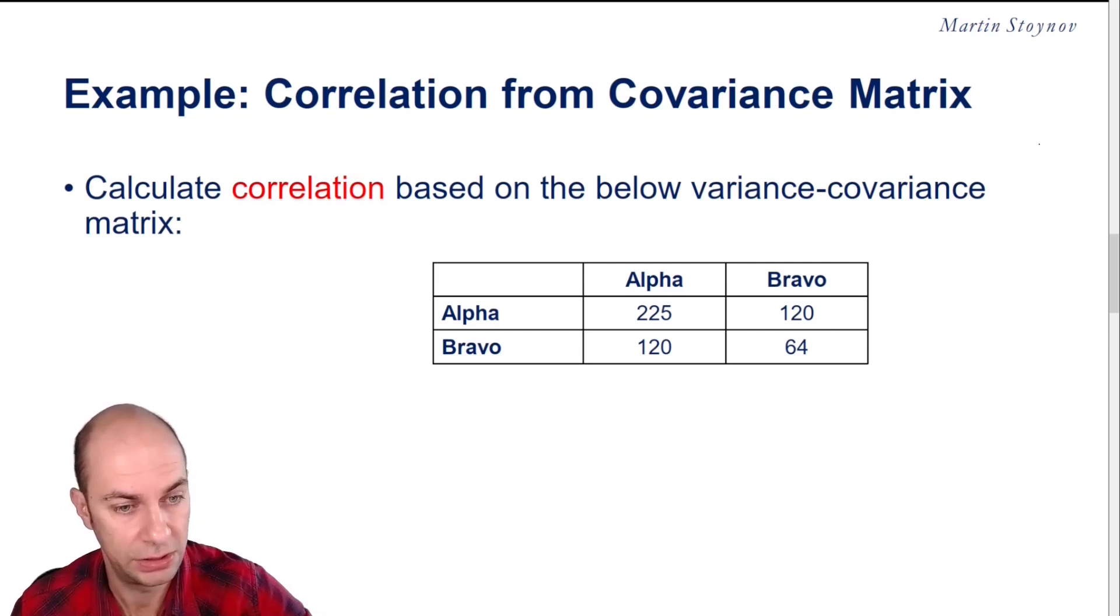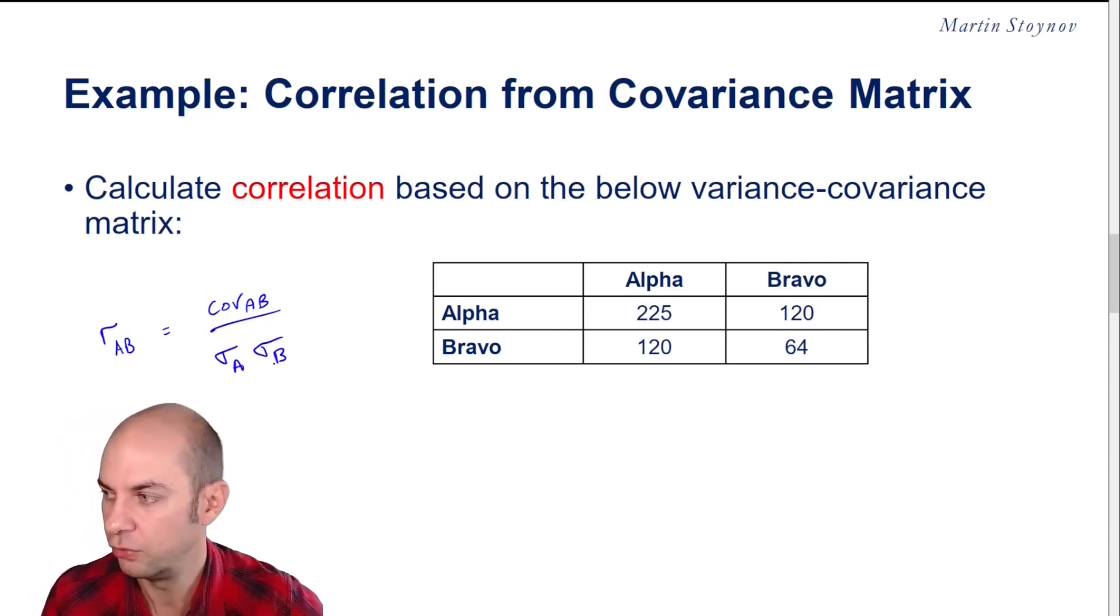The first thing you need to know, and you already know it from prior videos, is that the correlation of AB will be the covariance AB divided by the standard deviation of A times the standard deviation of B. You definitely need to know this formula for your exam.